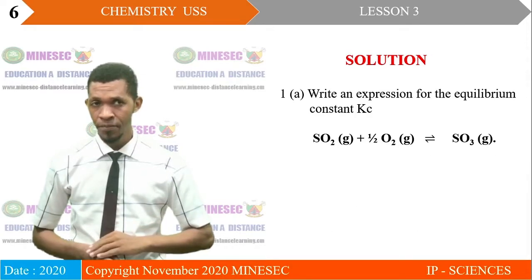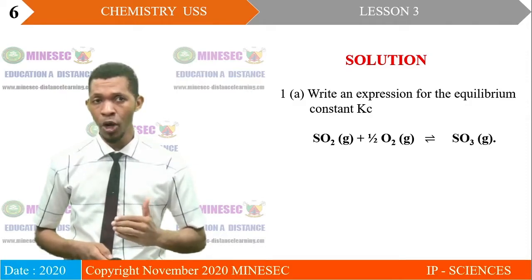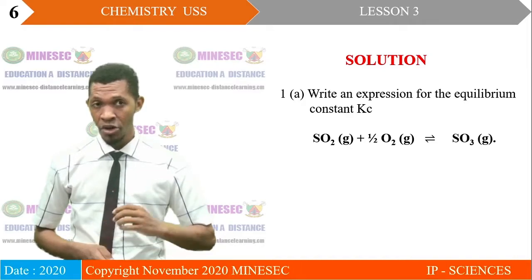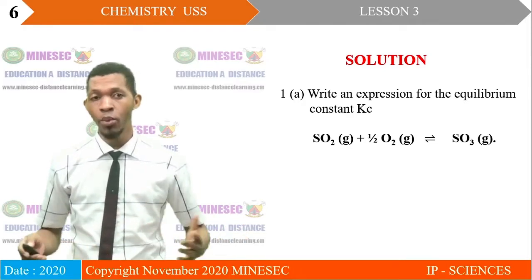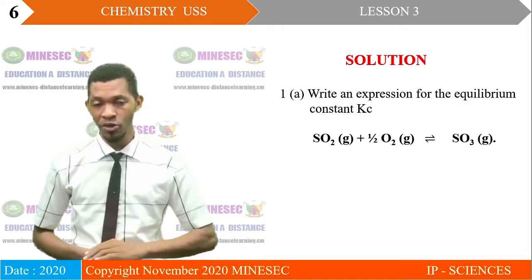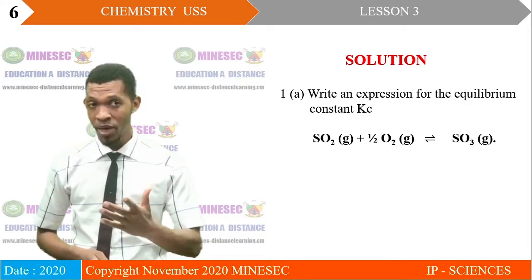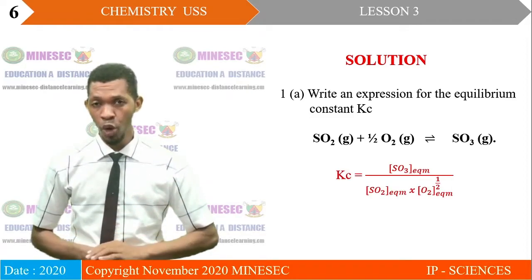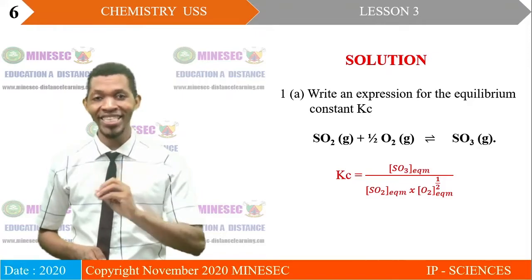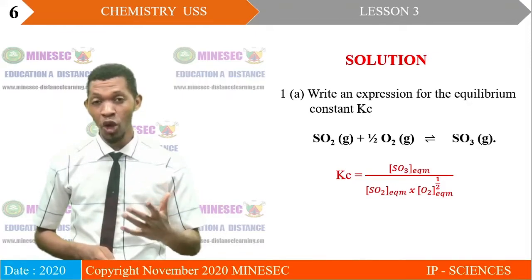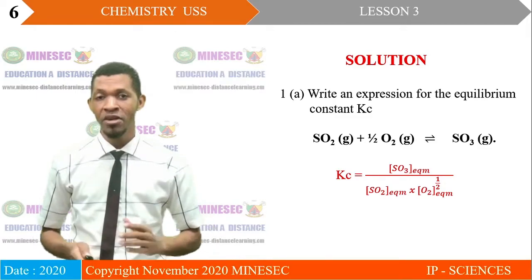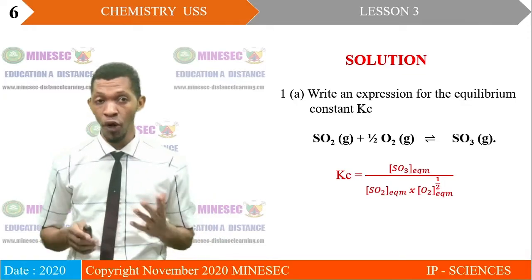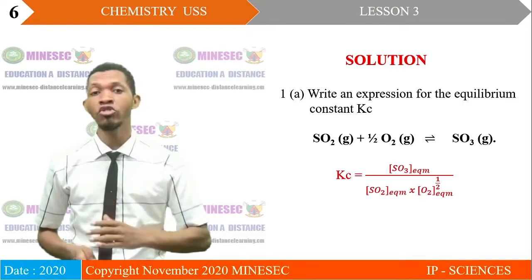Solution. Write an expression for the equilibrium constant Kc for the reaction where 1 mole of SO₂(g) reacting with half a mole of O₂(g) are in equilibrium with 1 mole of SO₃(g). Based on the equilibrium law, Kc = [SO₃] / ([SO₂] × [O₂]^(1/2)), where all concentrations are at equilibrium.